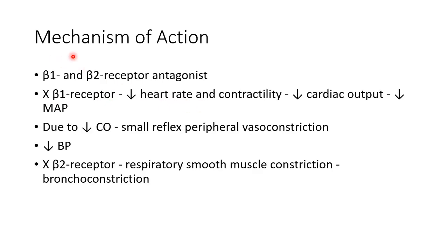Now let us see about the mechanism of action of propranolol. Propranolol is a non-selective beta receptor antagonist, so it blocks both beta 1 and beta 2 receptors. By blocking the beta 1 receptor, it causes a decrease in heart rate and contractility, which causes a decrease in cardiac output, eventually causing a decrease in mean arterial pressure.